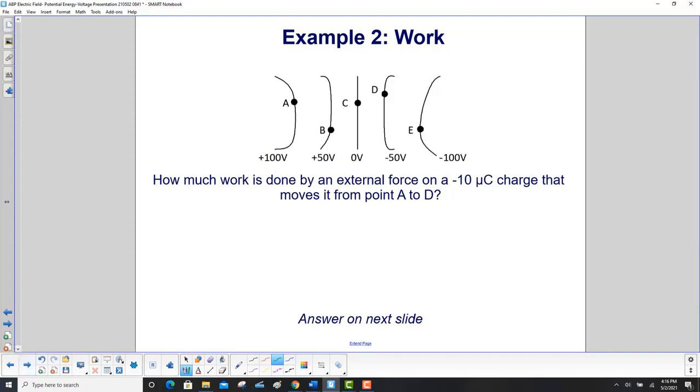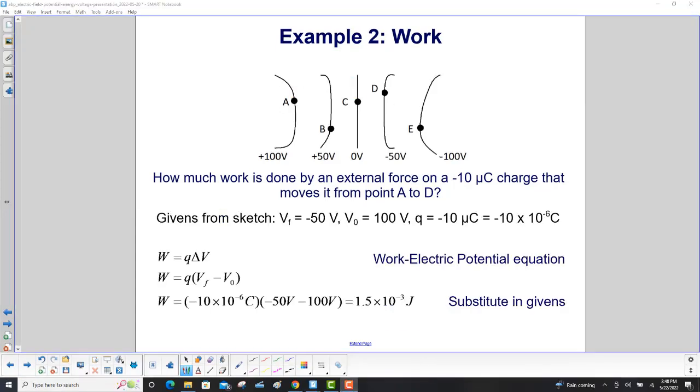How much work is done by an external force on a minus 10 microcoulomb charge that moves from point A to point D? We write our givens down. V final is minus 50 volts. V initial is 100 volts. Our charge is negative 10 microcoulombs or negative 10 times 10 to the minus 6th.